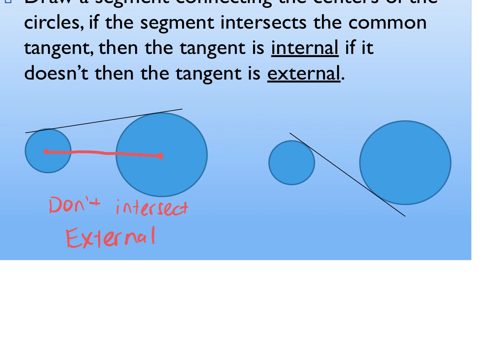What do you think this one's going to be? Internal. Because if we draw our two centers and draw a line across, they intersect right here. So in this case they do intersect — we would say it's an internal tangent.